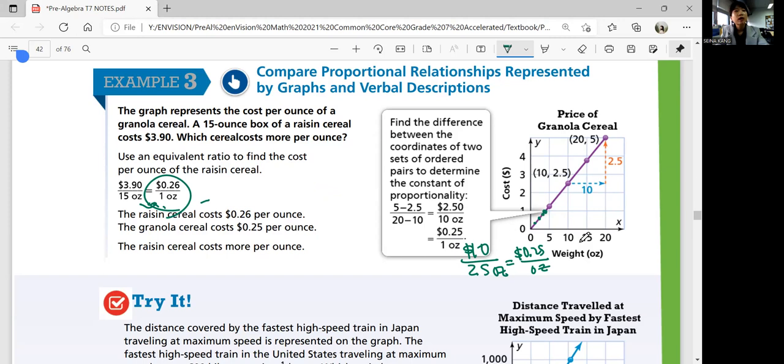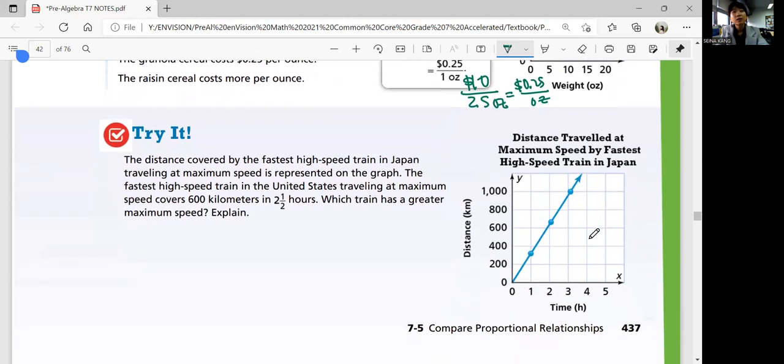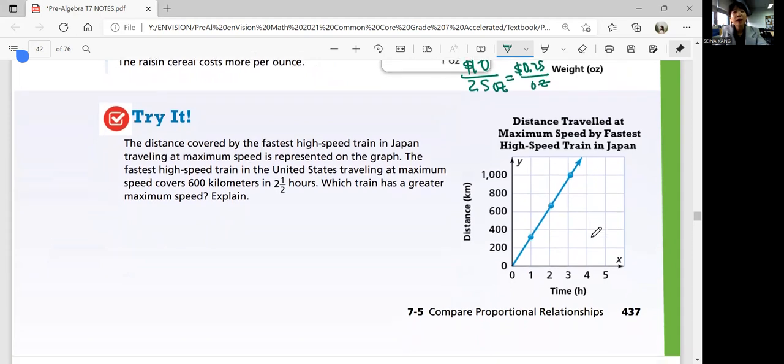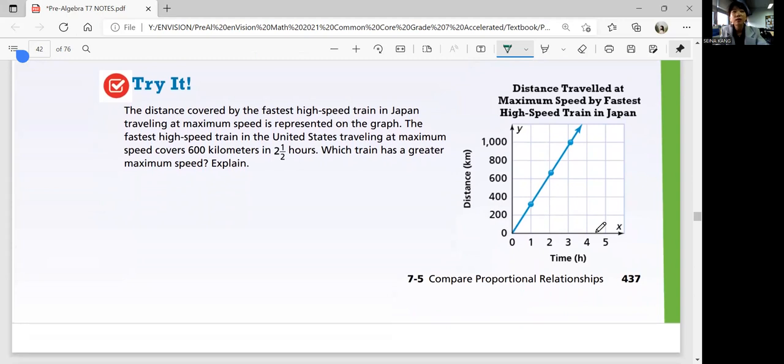So let's look at try it. The distance covered by the fastest high-speed train in Japan, traveling at maximum speed is represented on the graph. The fastest high-speed train in the United States, traveling at a maximum speed, covers 600 kilometers in 2.5 hours. This is US. Which train has a greater maximum speed?